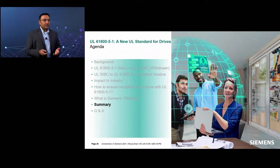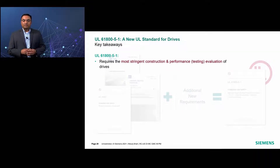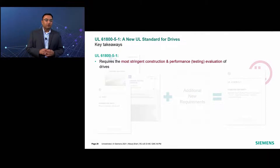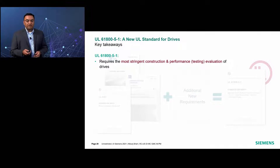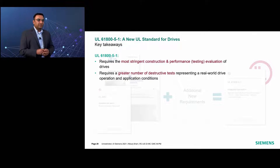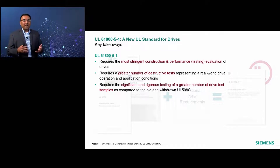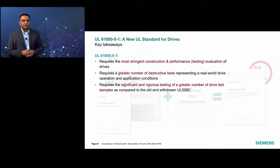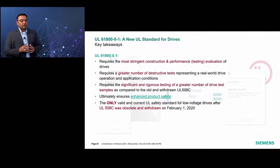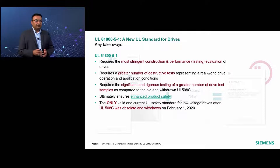Let us summarize what we learned. UL 61800-5-1 requires the most demanding construction, performance, and testing evaluation of low voltage adjustable speed drives. It requires a greater number of destructive tests representing real-world drive operation and application conditions, and therefore a significantly larger number of test samples are required to comply with all the newly added design and performance requirements, compared to drives certified under the obsolete and withdrawn UL-508C. This is to ensure an enhanced level of product safety. It is important to note that UL 61800-5-1 is now the only available UL standard for low-voltage adjustable speed drives or VFDs, after UL-508C was withdrawn on February 1st, 2020.